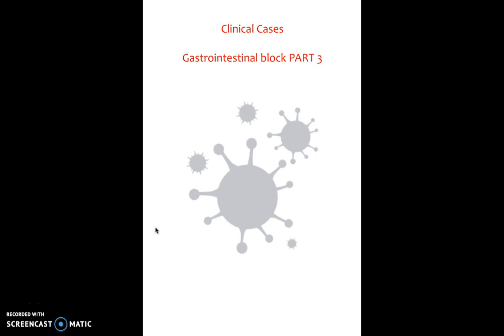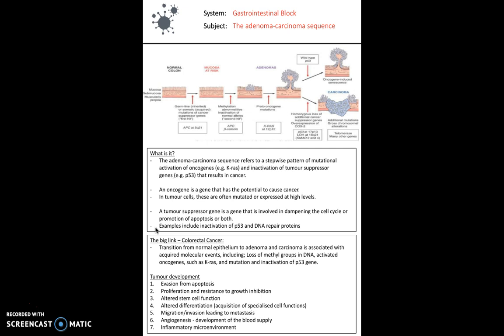Let's begin by looking at the adenoma carcinoma sequence. An adenocarcinoma is a type of cancerous tumour that can occur in several parts of the body. It's defined as neoplasia of the epithelial tissue that has glandular origin or glandular characteristics. The adenoma carcinoma sequence refers to a step-by-step pattern of activation of oncogenes or suppression and inactivation of tumour suppressor genes. Normally, an oncogene has the potential to cause cancer, and in tumour cells these are often mutated or expressed at higher levels. Tumour suppressor genes such as P53, when inactivated, can also cause cancer.